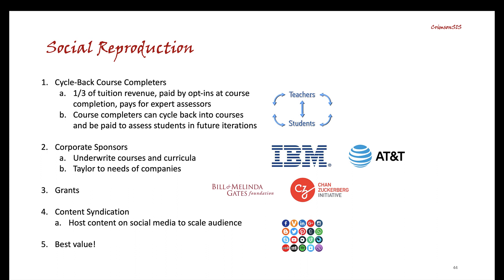Scaling is a buzzword in entrepreneurship. Here's how we'll get it done with Crimson SIS. One mechanic I've employed is to hire course completers as expert assessors — in effect, every penny spent on tuition can be earned back by assisting future participants in the course. I've also garnered corporate sponsors, who are attracted by the prospect of customized training for their own employees and benefit from co-branding. Grants are another source of revenue. But by far, content syndication via social media is the best scaling mechanic. Students encounter your courses on the net and transition to the institution in search of credit and a grade — Sal Khan refers to this as signaling. Last but not least, low cost is an inducement, especially with the prospect of ongoing tuition increases.